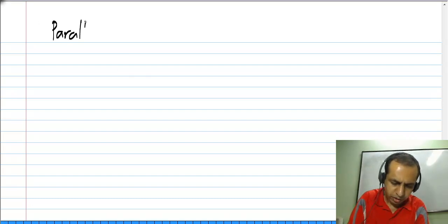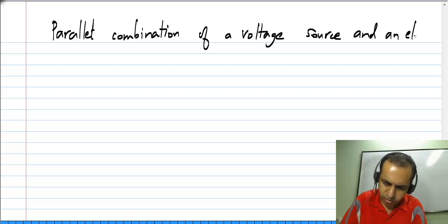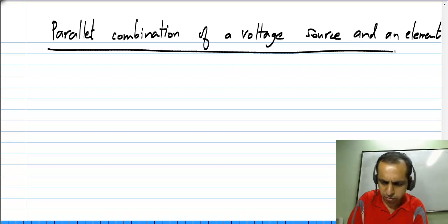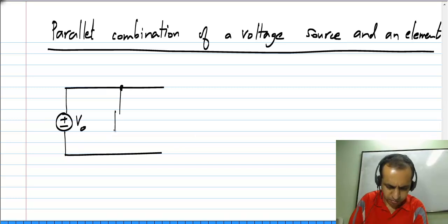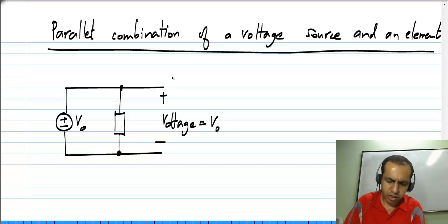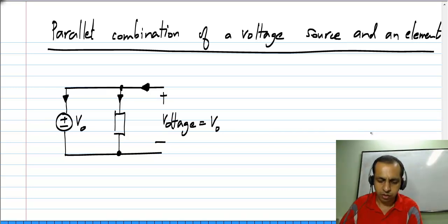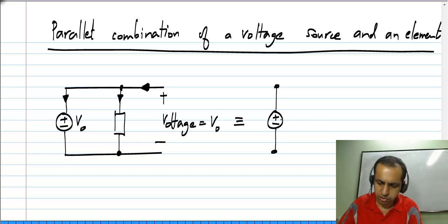Similarly, we will consider a parallel combination of a voltage source and an element. Let us say this voltage source has a value V naught, and we can connect any element across it. We know that across this combination we will have a voltage equal to V naught, regardless of what current is flowing through it, because the current through the voltage source can be anything — and this current is just the current through the voltage source plus the current through the element, which can also be anything. So the parallel combination of a voltage source and an element is just equivalent to the same voltage source V naught.